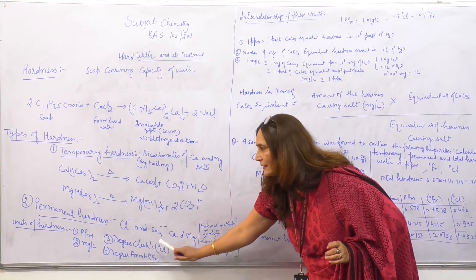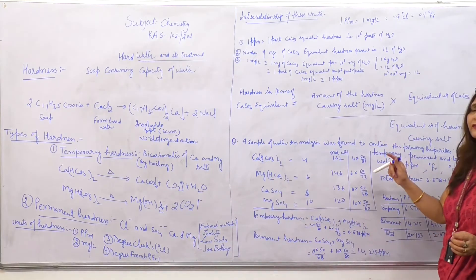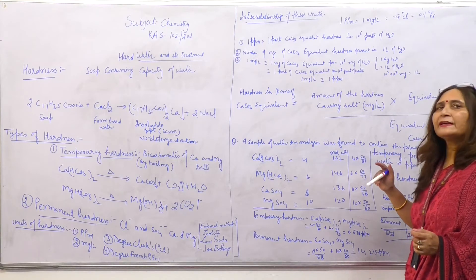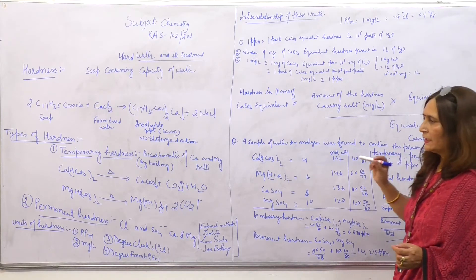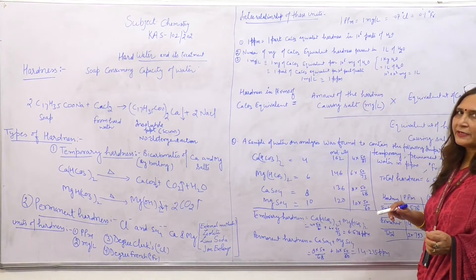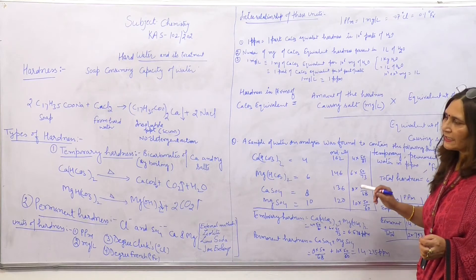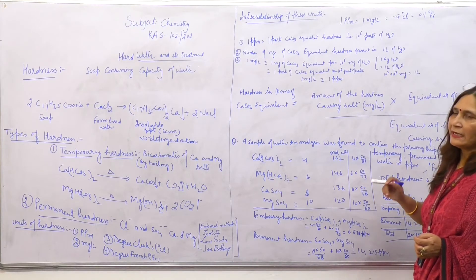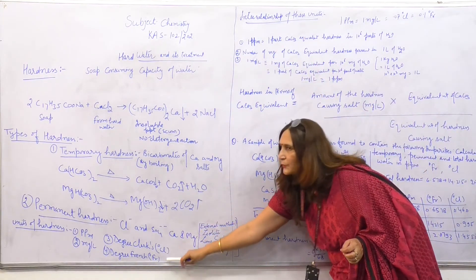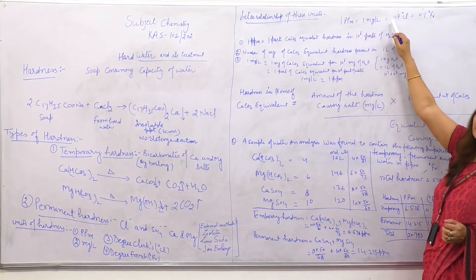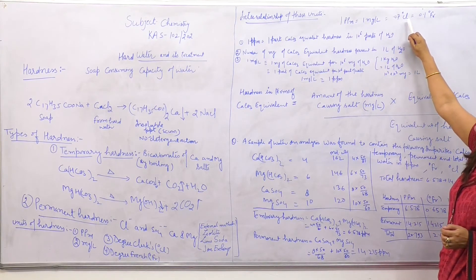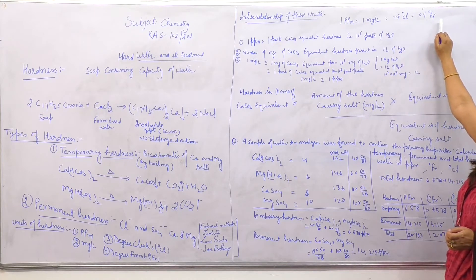Degree Clark is the number of parts of calcium carbonate equivalent hardness present per 70,000 parts of water. Degree French is the number of parts of calcium carbonate equivalent hardness present in 10⁵ parts of water. The interrelationship of these units: 1 ppm = 1 mg/L = 0.07 degree Clark = 0.1 degree French.